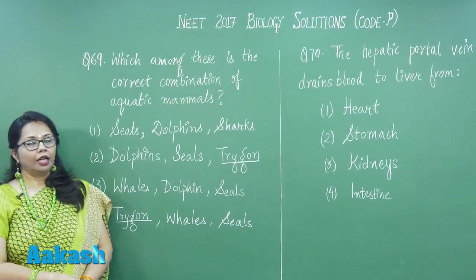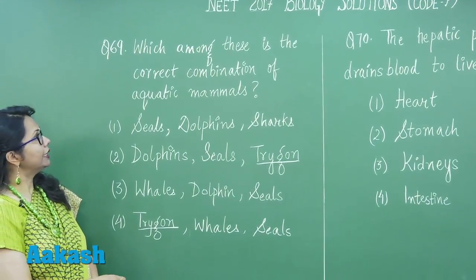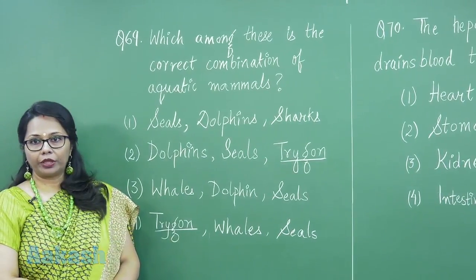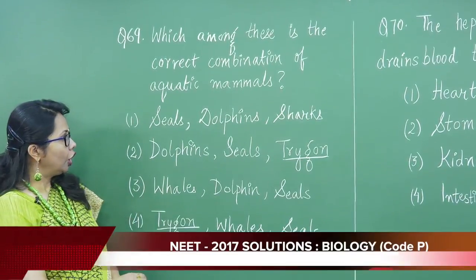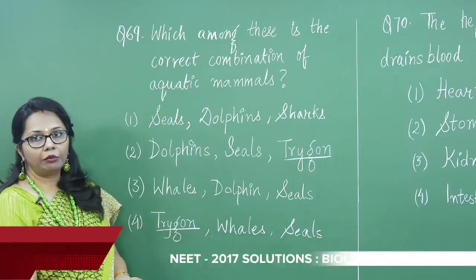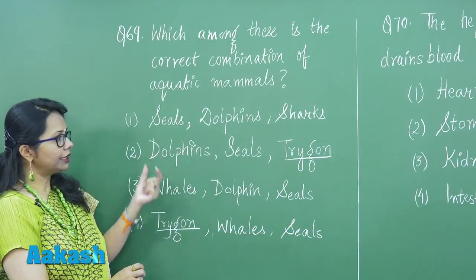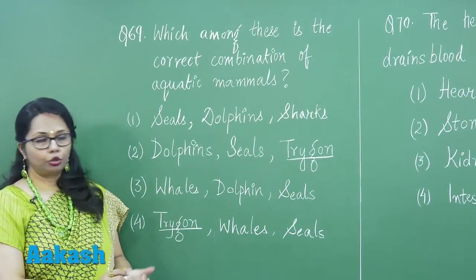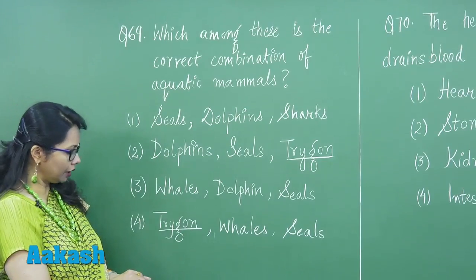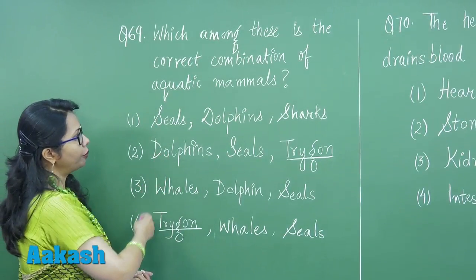Question 69: which among these is the correct combination of aquatic mammals? The options have three animals each, and we need to choose which set contains aquatic mammals.